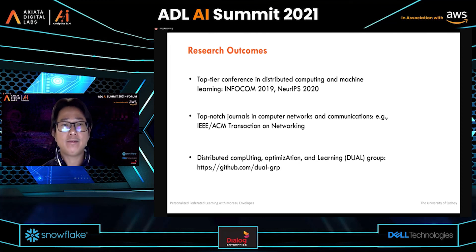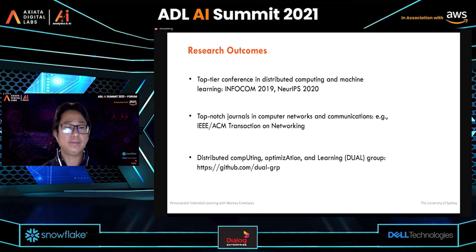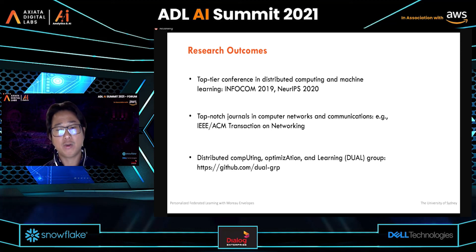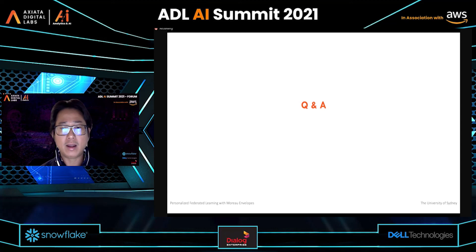Our research group has several publications in top-tier conferences in distributed computing and machine learning, and in top-notch journals in computer networks and communications. We also have ongoing work in several directions in the Distributed Computing, Optimization, and Learning group. I have finished my presentation and welcome all questions.